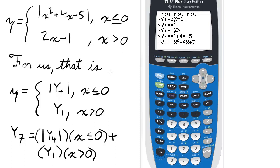Now when you have piecewise functions, you want to set each part or each piece as a different function. So for us, the first part, the absolute value of x squared, is going to be y4 for x is less than or equal to 0. And the second part, the 2x minus 1, is defined as y1 for x greater than 0.